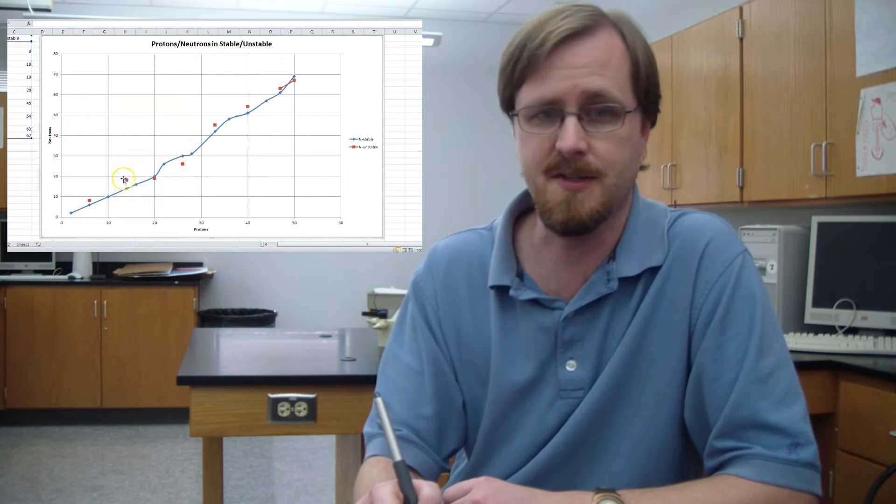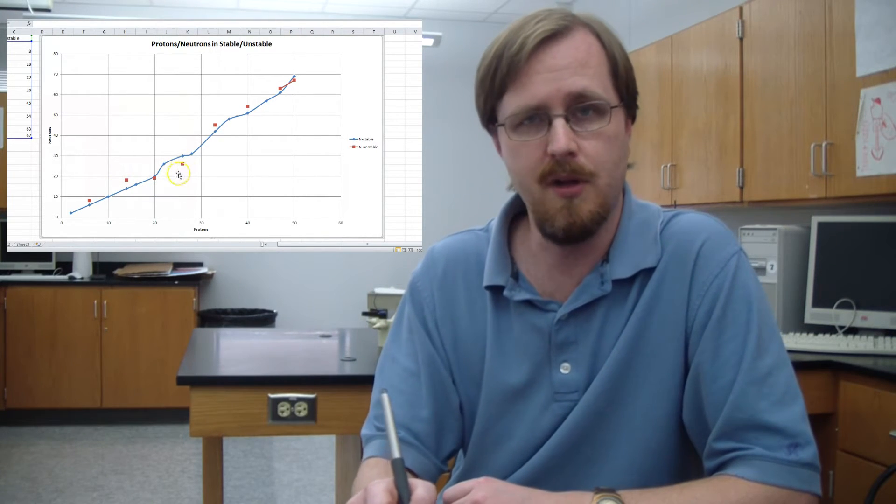And you can see right here, what we've got is a little graph that represents the stability of the atom. So everything, this blue line right here, this represents stable nuclei. And any time the ratio of protons to neutrons gets a little out of balance, whether it's above or below, as you can see here, things start to decay.